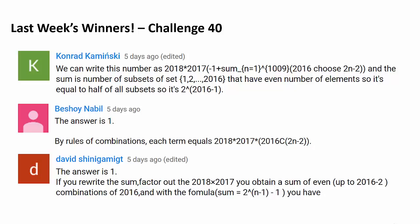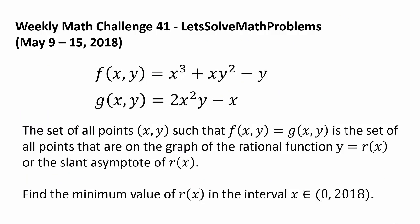Now it's time for this week's challenge. F of x, y is x cubed plus x, y squared minus y. And g of x, y is 2x squared y minus x. The set of all points x, y such that f(x, y) equals g(x, y) is the set of all points that are on the graph of the rational function y equals r of x, or the slant asymptote of r of x. Find the minimum value of r of x in the interval x belonging to the open interval 0 to 2018.